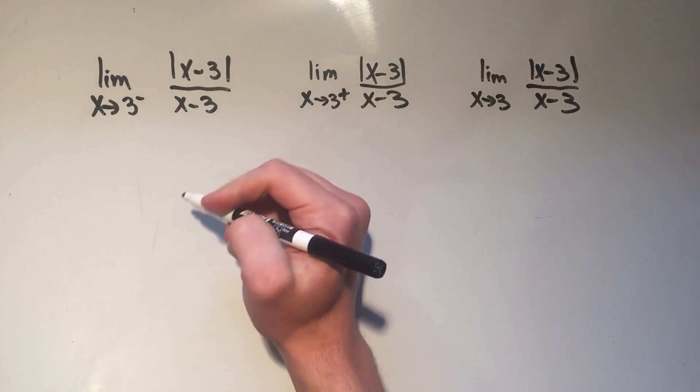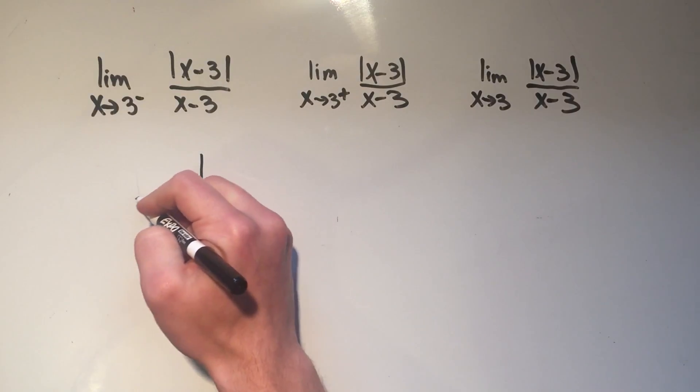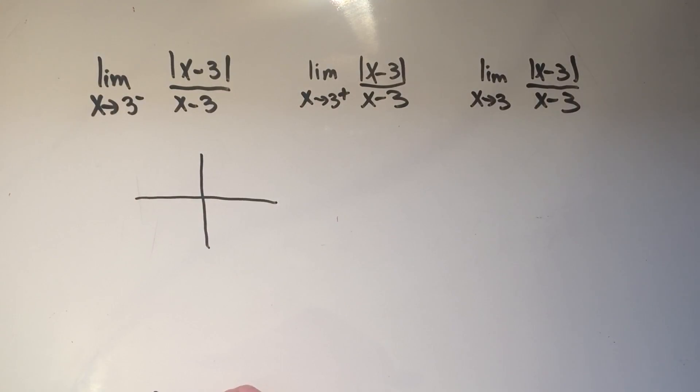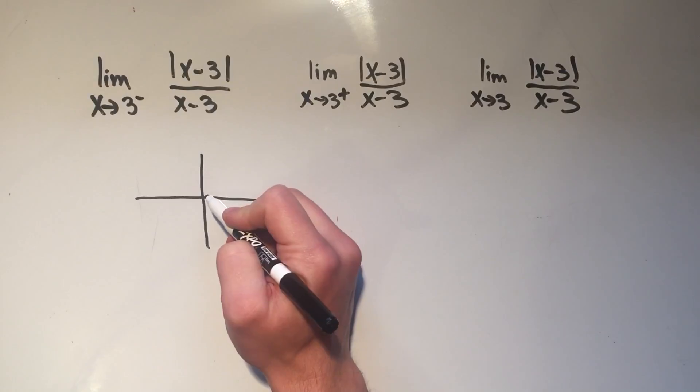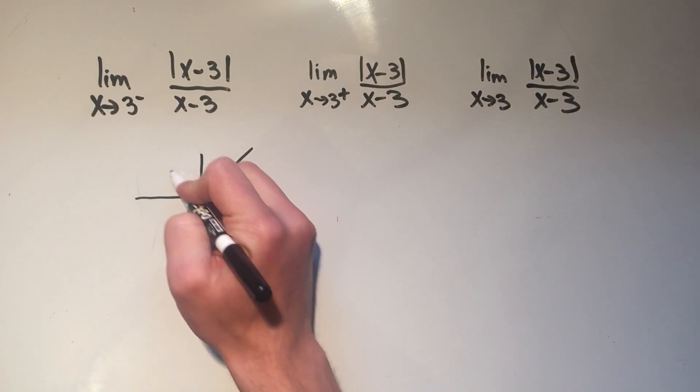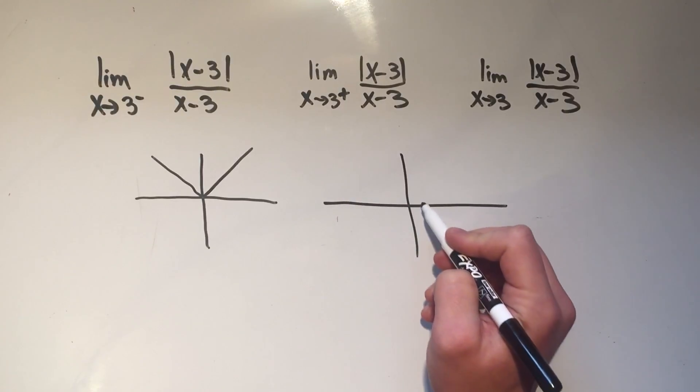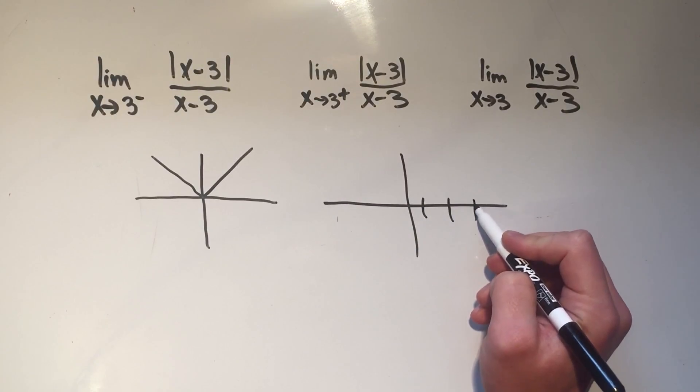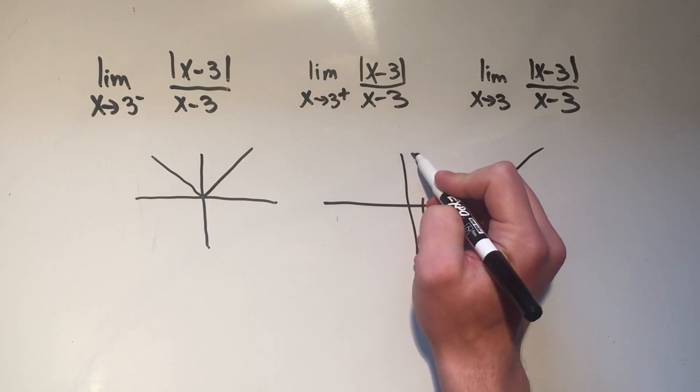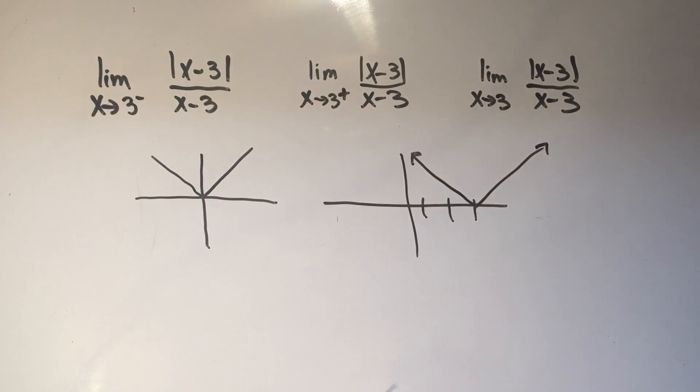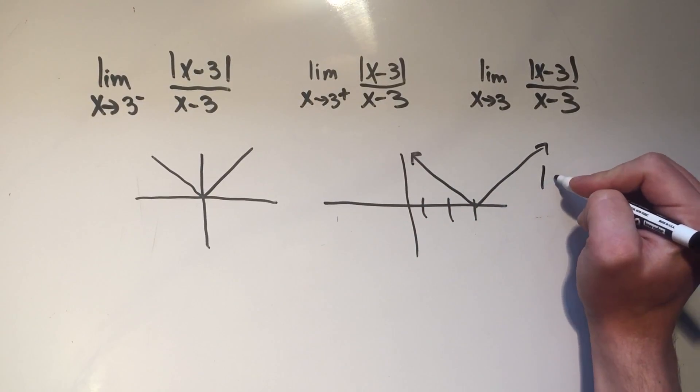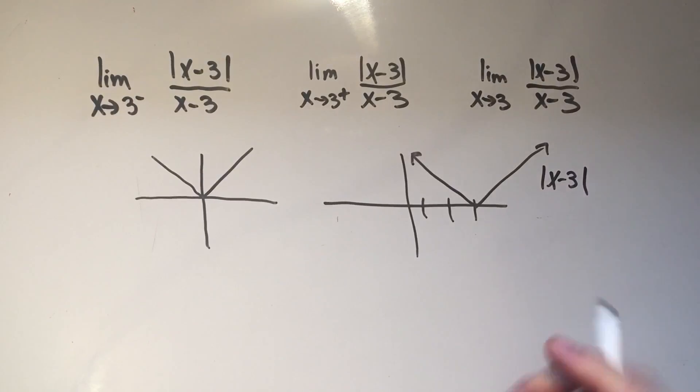Now you could graph the absolute value of x minus three, and you know that the absolute value of x looks like a V, the minus three will shift this to the right three. So that's what the absolute value of x minus three looks like.